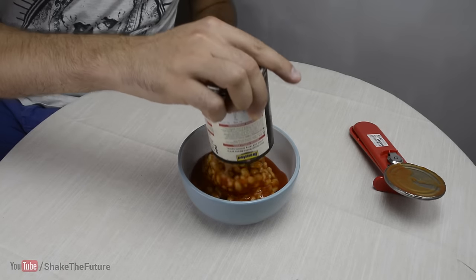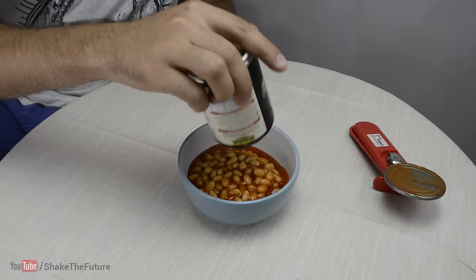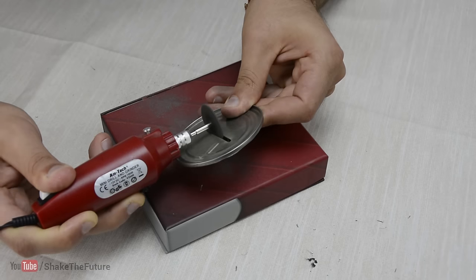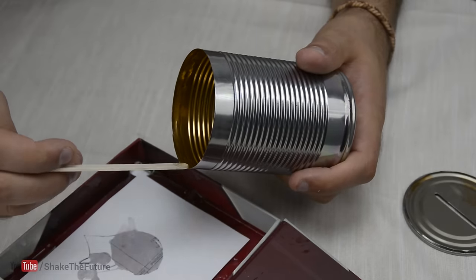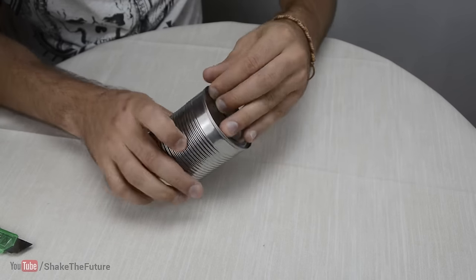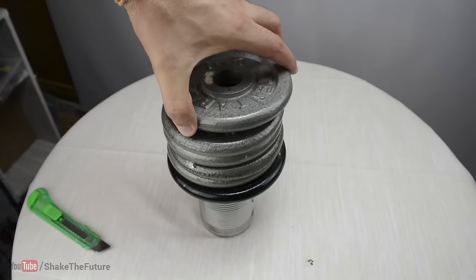Empty and wash out the can. Use a Dremel tool to cut a hole. Now glue back the lid. Put some weight on top until the glue dries.